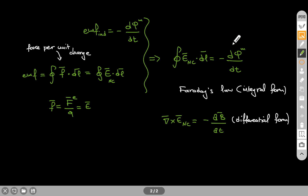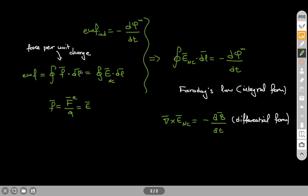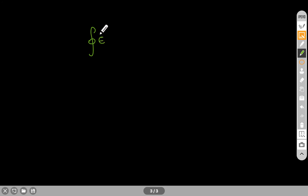There is one important comment I want to make about Faraday's law in the integral form. This is a closed path integral, and the calculation of the flux does include another integral. Let me add one more board so we can see that better. So this is the closed path integral of the non-Coulomb electric field dot dl, equal to minus — and now I will use the definition of the flux.